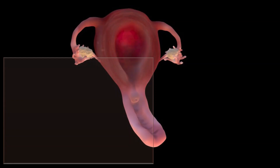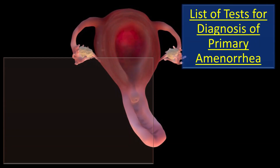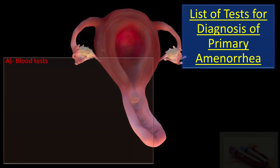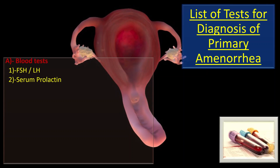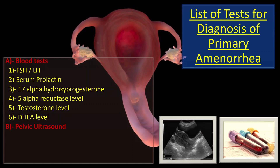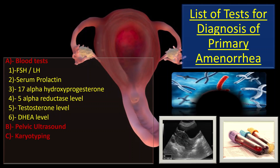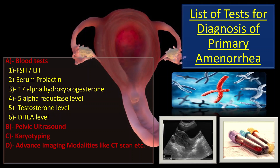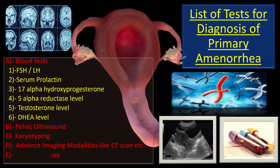We have a list of tests for the diagnosis of primary amenorrhea, and those include different blood tests like FSH-LH level, serum prolactin, 17-alpha-hydroxyprogesterone level, 5-alpha-reductase level, testosterone level, and dehydroepiandrosterone level. The other tests are pelvic ultrasound, karyotyping, and advanced imaging modalities like CT scan and gonadal biopsy.